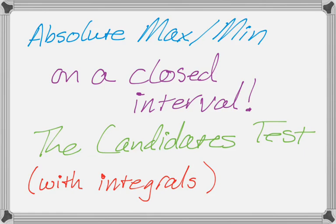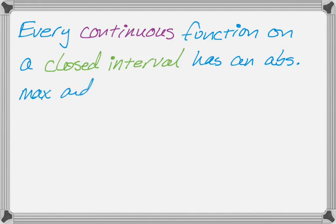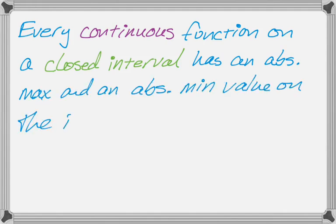So here's basically what it says. And it says, well, this isn't what it says. This is called the extreme value theorem, actually. Every continuous function on a closed interval, so you have to have a closed interval and the function has to be continuous, otherwise this doesn't apply, has an absolute maximum and an absolute minimum value somewhere on the interval. And so this is really important, and we're going to use it.